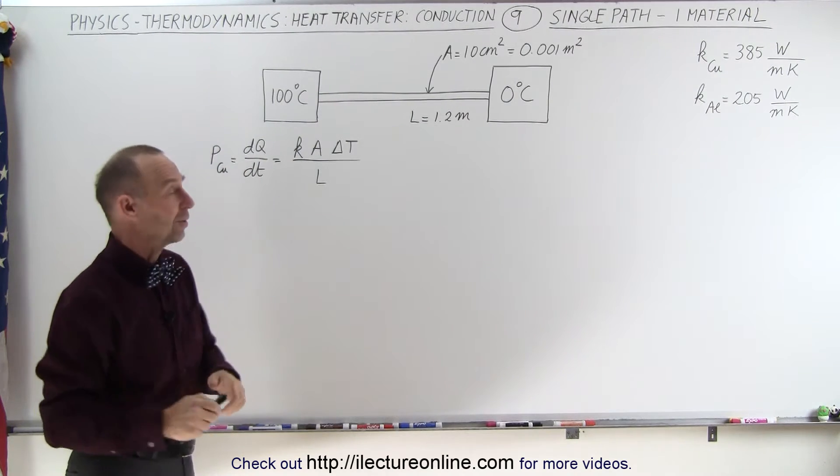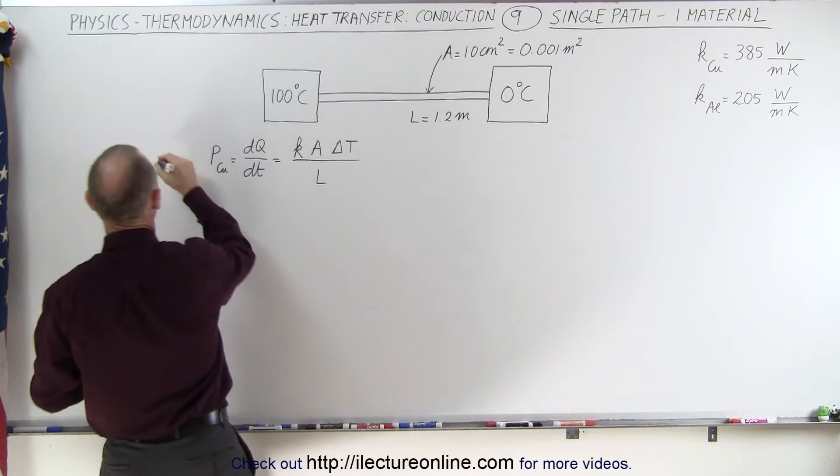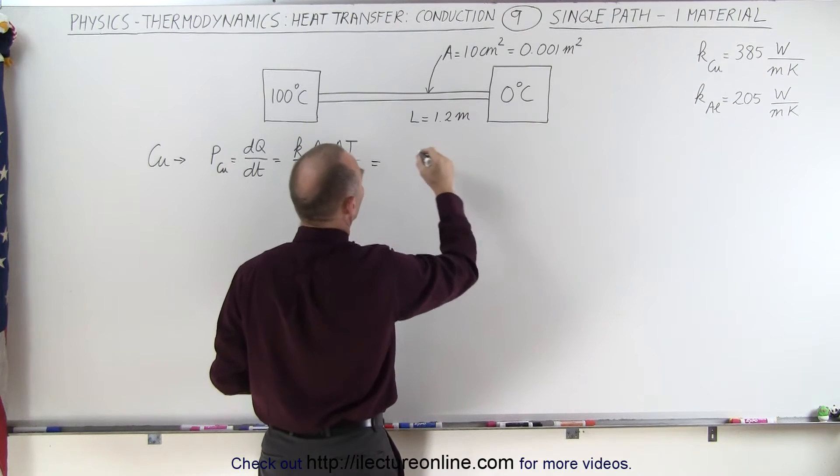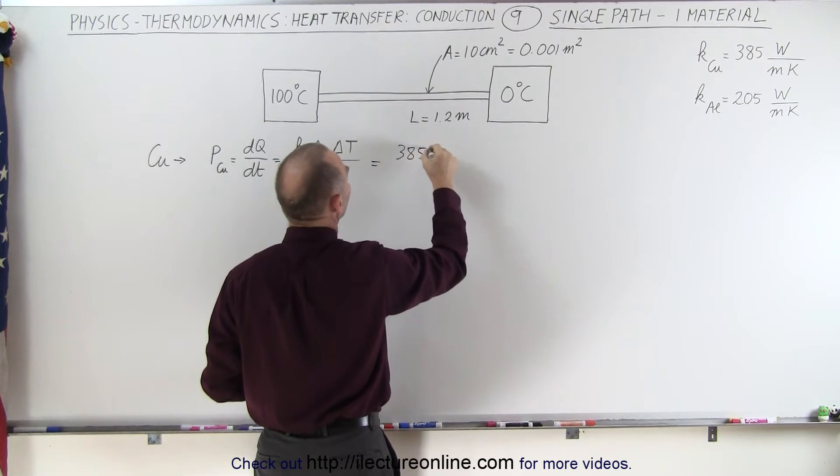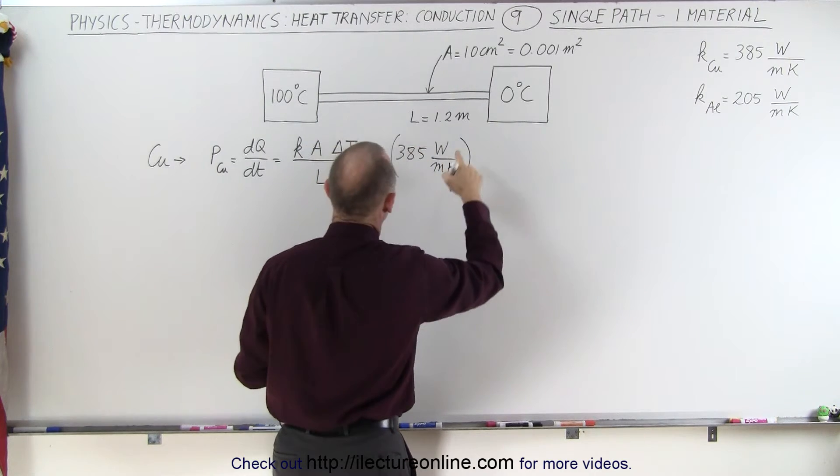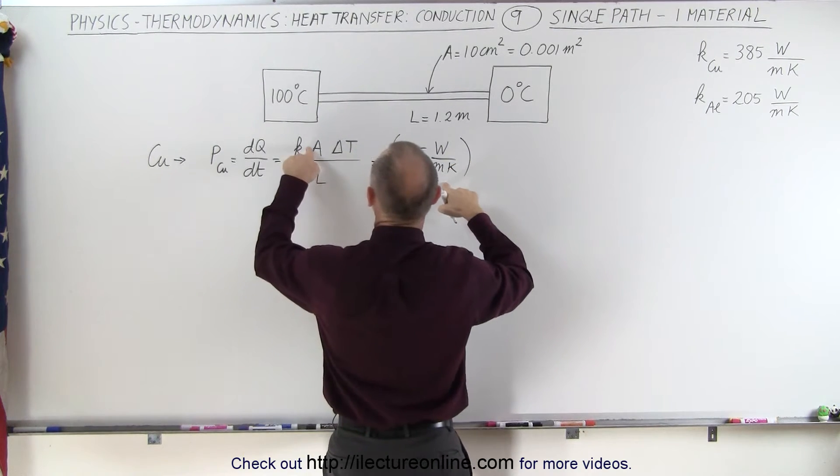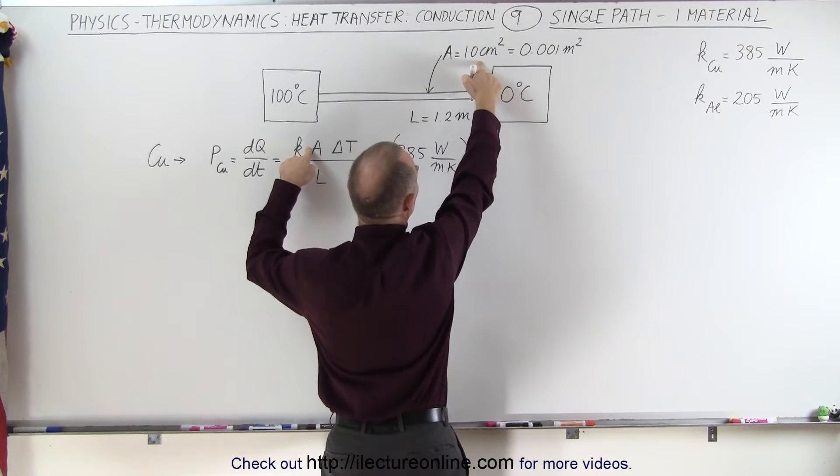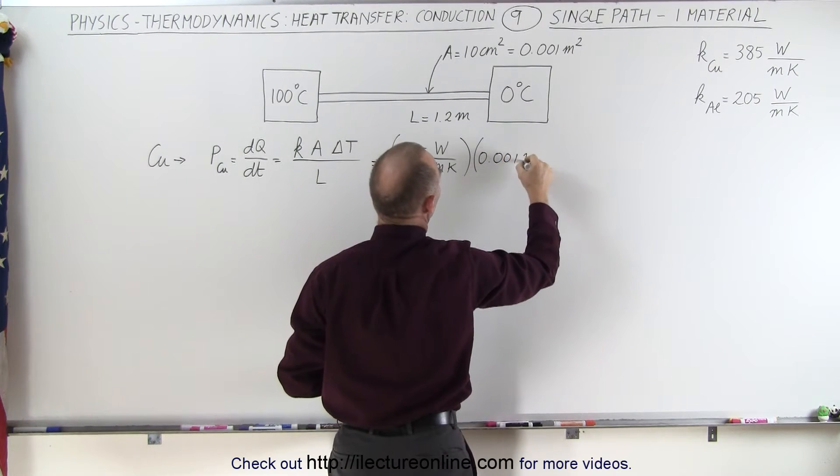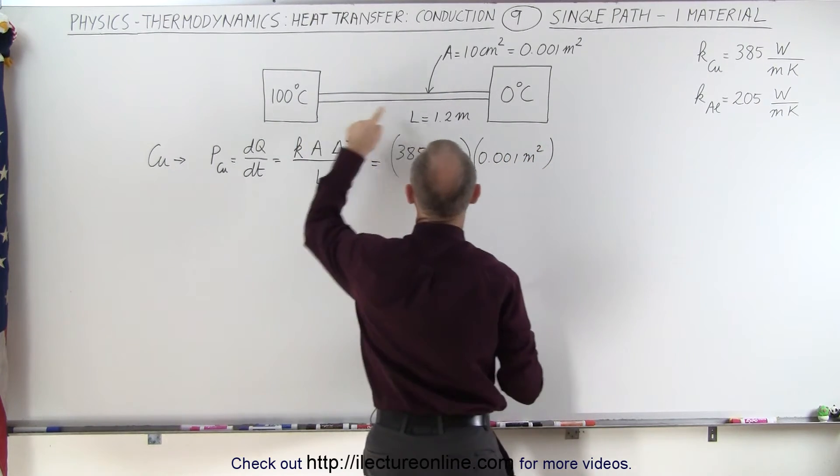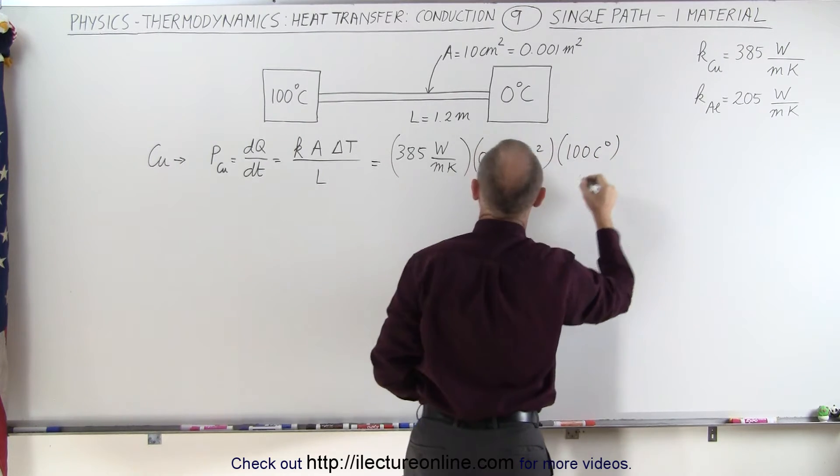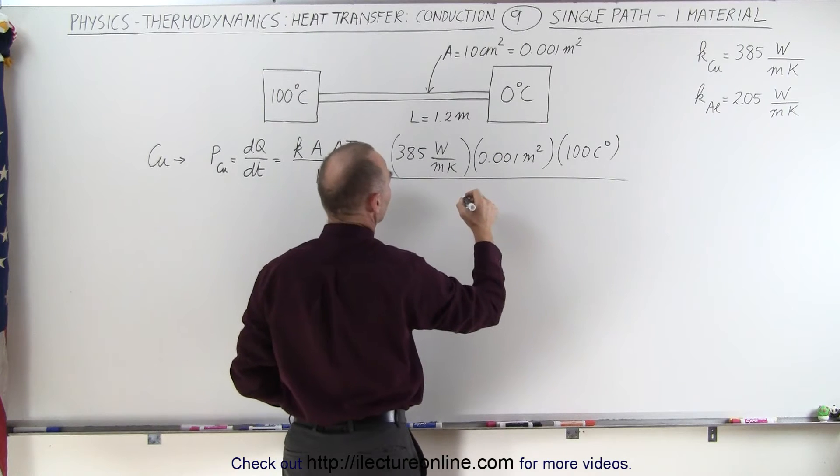So let's plug in the values and see what we get. Starting with copper, this is therefore equal to 385 watts per meter per kelvin. The cross-sectional area is 10 centimeters squared, converted to meters squared, it's 0.001 meters squared. Then we have the difference in temperature, which is 100 centigrade degrees, and we divide that by the length, which is 1.2 meters.